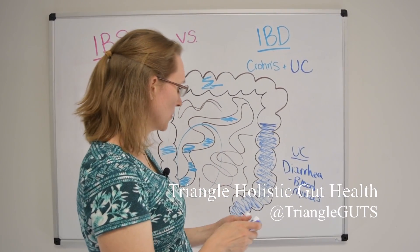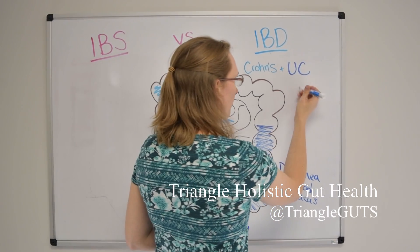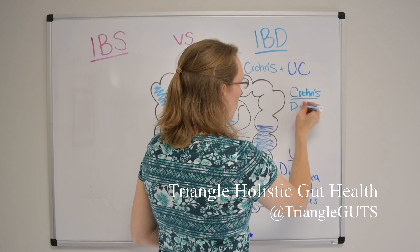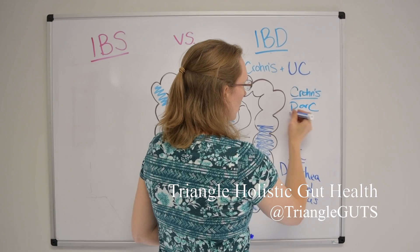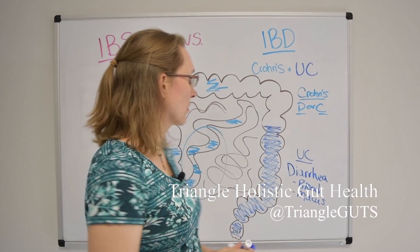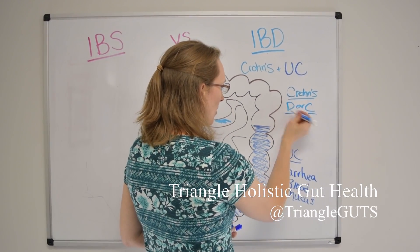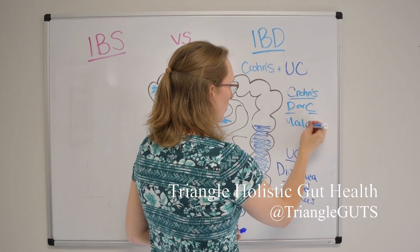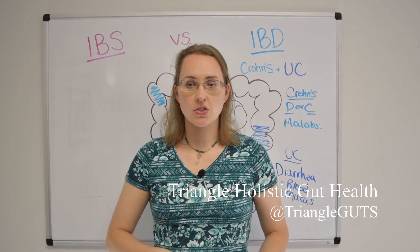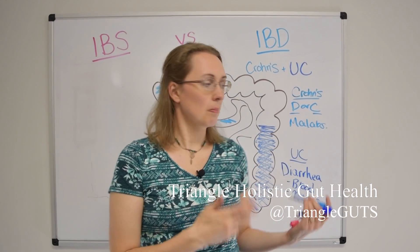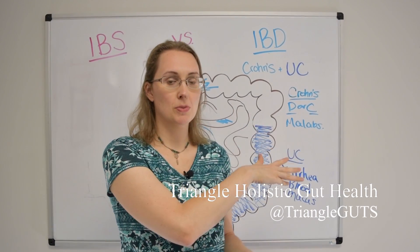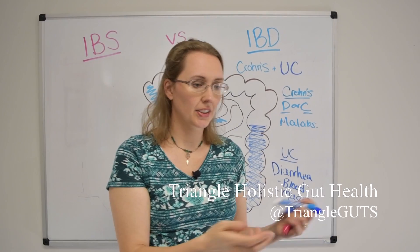With Crohn's, you can have diarrhea or constipation. You can have blood and mucus in the stools, but it's less common. One of the things that really goes hand in hand with Crohn's is malabsorption or maldigestion. So if you have a lot of nutrient deficiencies and you're wondering why, beyond just leaky gut or celiac, it might be Crohn's disease — since it affects the small intestines, it is more likely to cause malabsorption than the others. It's not a surefire thing, but it does happen quite a bit.